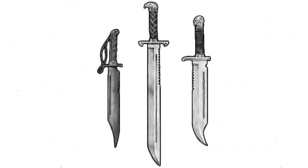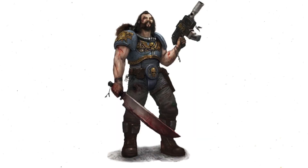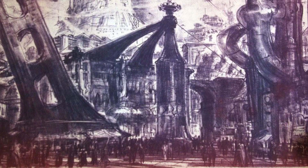In the beginning of the 41st millennium, an STC database template for the combat knife was discovered by two Imperial Guard Scouts. The new design proved sharper, lighter, and tougher than previous designs. They were hailed as heroes by the Imperium, rewarded by being raised to Imperial nobility and made planetary governors. The new combat knife design was adopted by 30 chapters of the Adeptus Astartes.